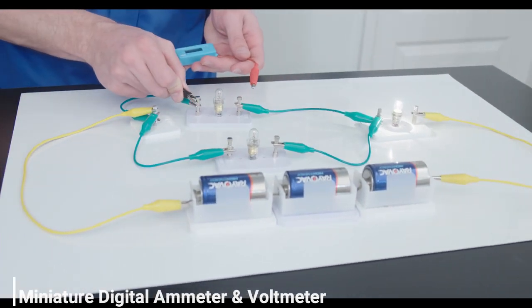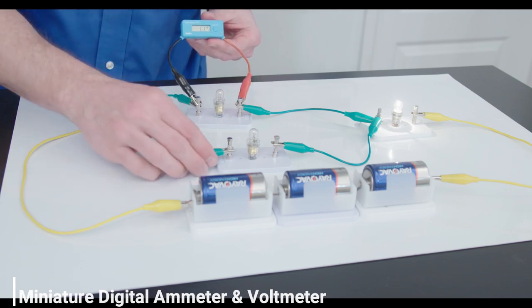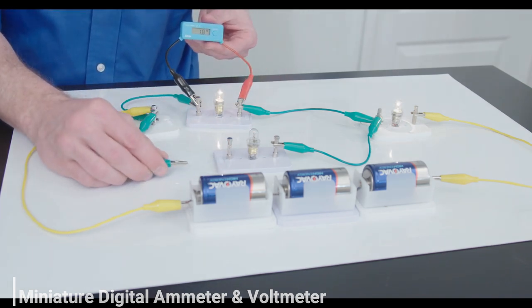The ammeter and voltmeter both have these connecting wires with alligator clips on the end. They're so small and versatile, and they provide immediate feedback. Changing variables can be seen right away.